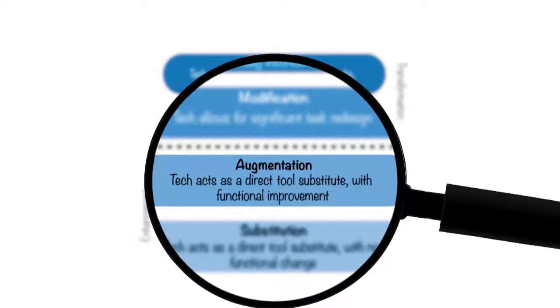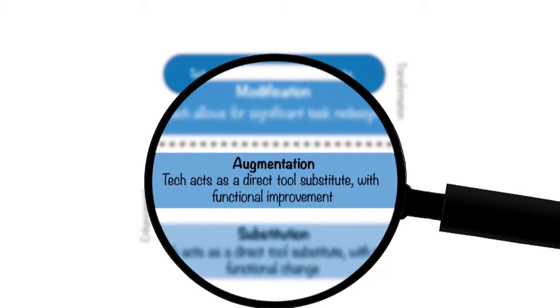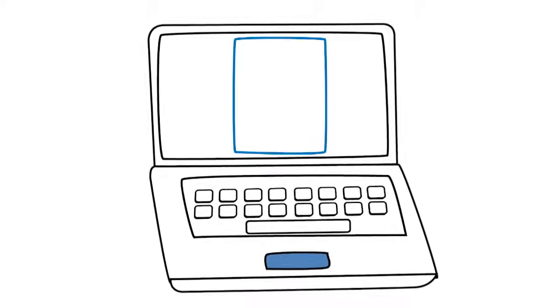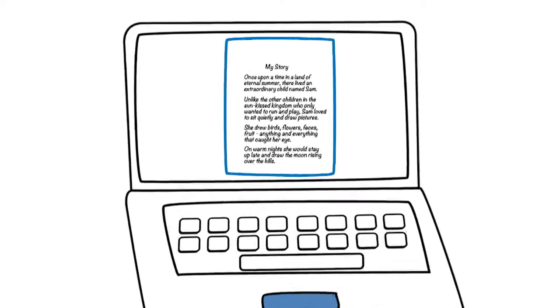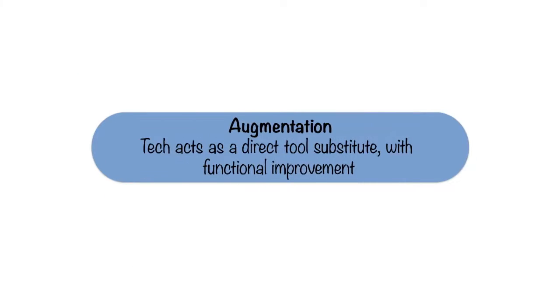In augmentation, technology still substitutes but with some functional improvement. What if you took the same creative writing assignment and had students use a word processing program? They could use features such as spell check and tools for formatting. Again, the story writing task is the same, but the technology augments it with enhanced productivity.